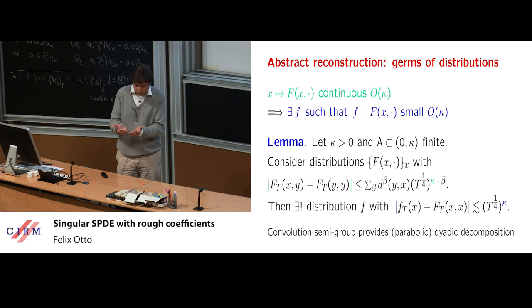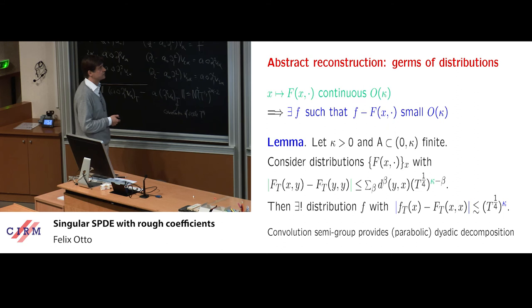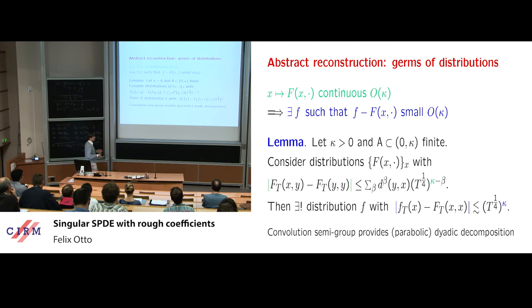The reconstruction theorem has a similar flavor to the standard reconstruction theorem in regularity structures. You have germs of distributions at every base point, and out of this family you want to build a single distribution. For this you need a continuity condition in the base point, probed by convolving the distribution and imposing a graded-type assumption. It's convenient here to have the parabolic convolution semi-group because it naturally allows for dyadic decomposition.